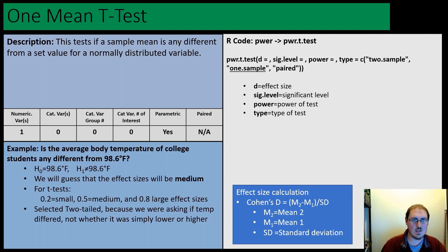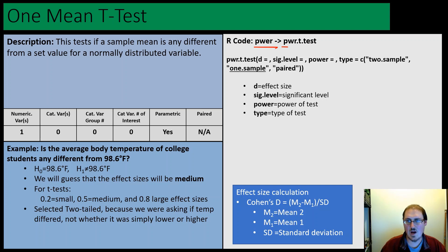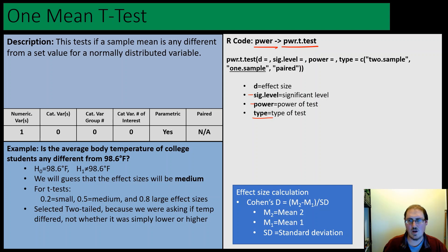To calculate this in R, it's pretty simple. This is one of the most basic tests. We're going to be using the package 'pwr' and then the function power.t.test. We'll be using this t-test function three times, so there are several things to enter: the first is effect size d, then significance level, power, and type. For type, you can have two-sample, one-sample, or paired — of course we will start with one-sample here.